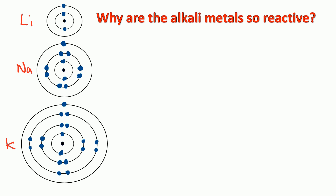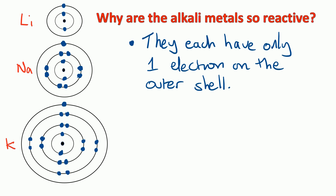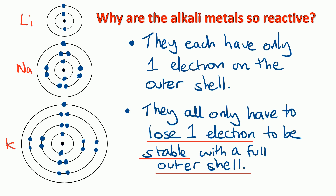They've all got one electron in their outer shell, and that's because they're in group 1. Remember the rule: the group number tells you how many electrons are in the outer shell. So if we were talking about group 5, they'd all have five electrons in the outer shell, but group 1 metals all have one electron in the outer shell.